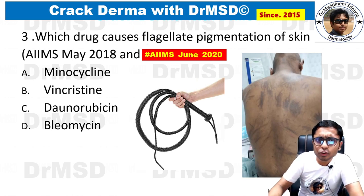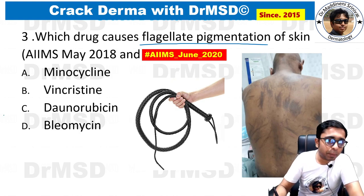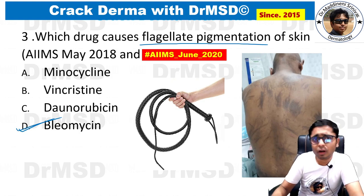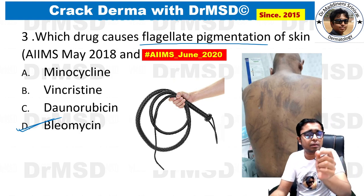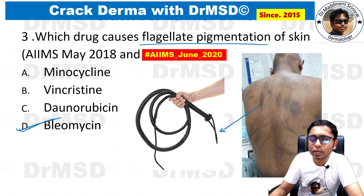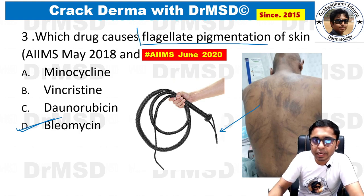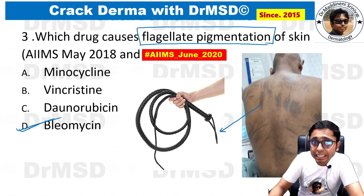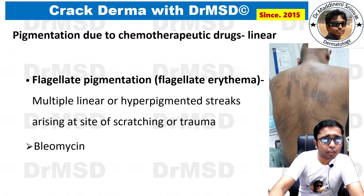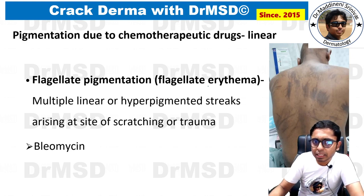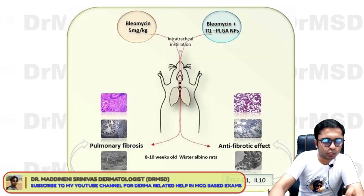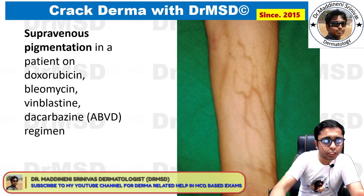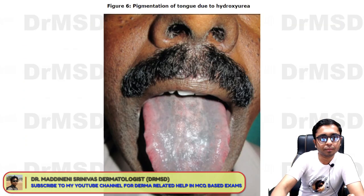The next question: which drug causes flagellate pigmentation of the skin? The answer is bleomycin. Just as whip marks create linear pigmentation on skin, the anti-cancer medication bleomycin produces this kind of flagellate pigmentation. Initially patients develop flagellate erythema, which ultimately heals with pigmentation. This is a memory-based question again integrating pharmacology.